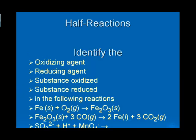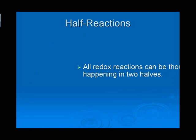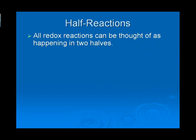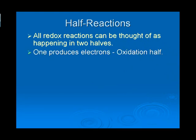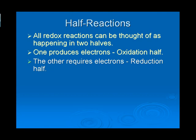Now, we take redox reactions and we break them down into half reactions. One half reaction produces the electrons. That's the oxidation half. The other half actually requires electrons. That's called the reduction half.